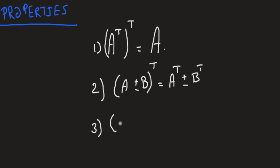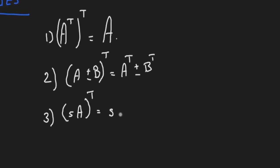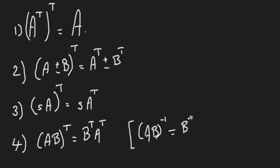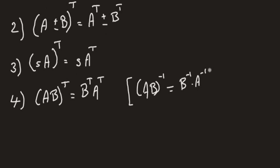Three, if you scale a matrix with a scalar S, then you take the transpose, this is the equivalent of scaling the transpose of the matrix. Four, the transpose of the product is the reverse order of the product of the transpose of each matrix. So this is also like the inverse. Recall that in the previous lecture, we mentioned that AB inverse is B inverse times A inverse.